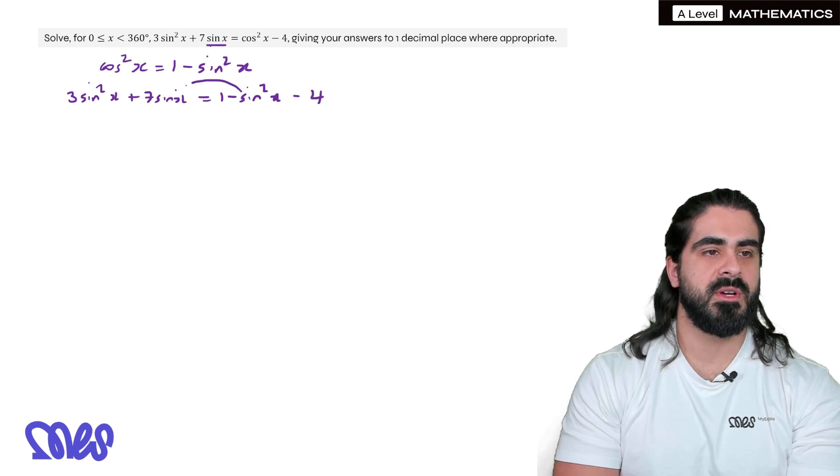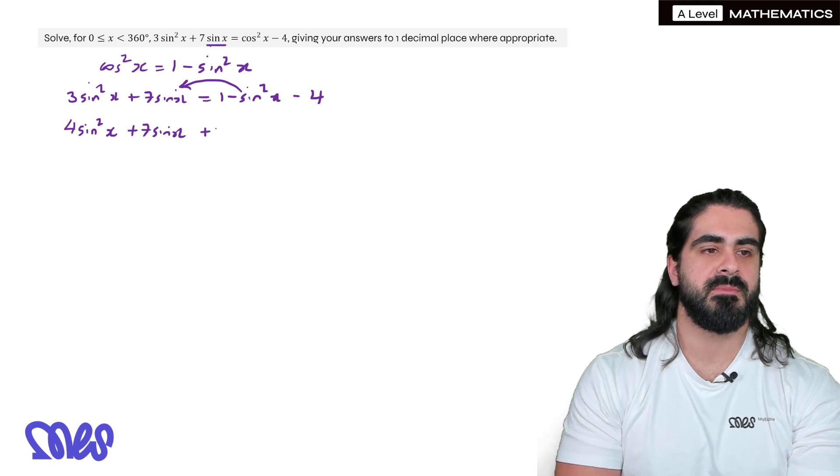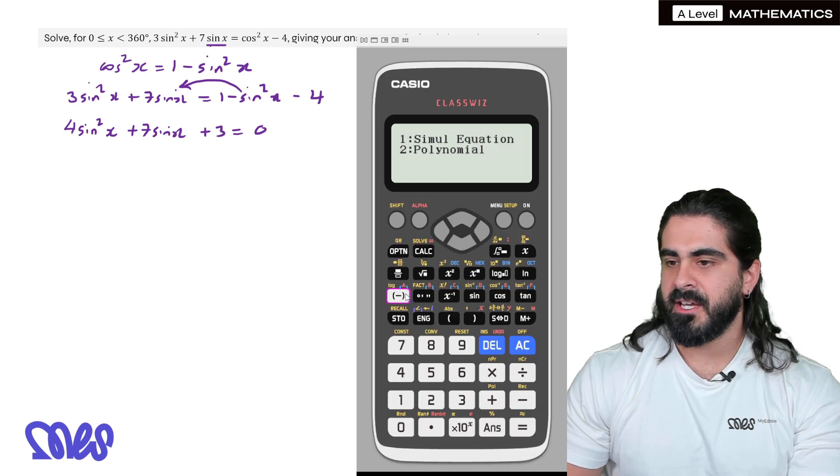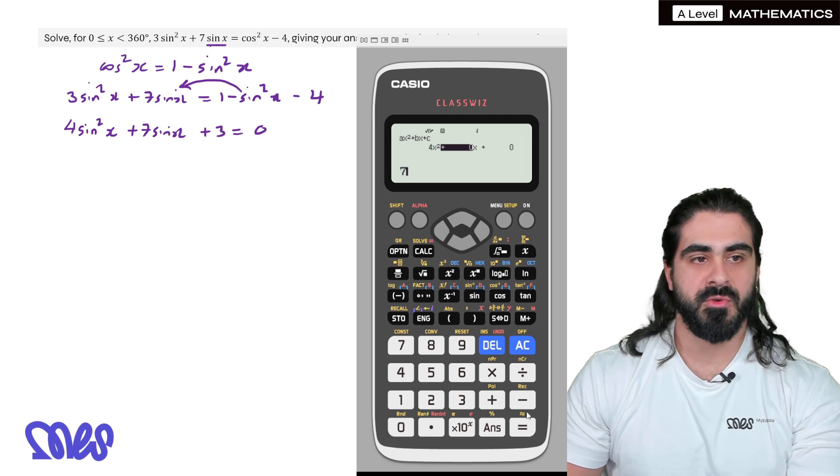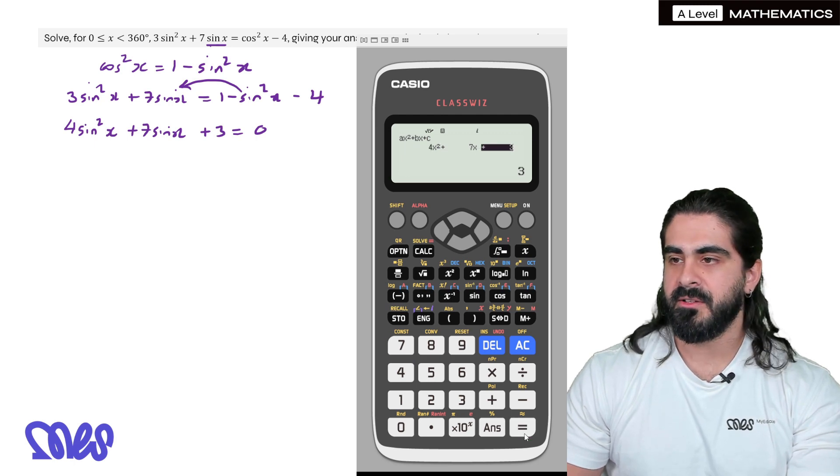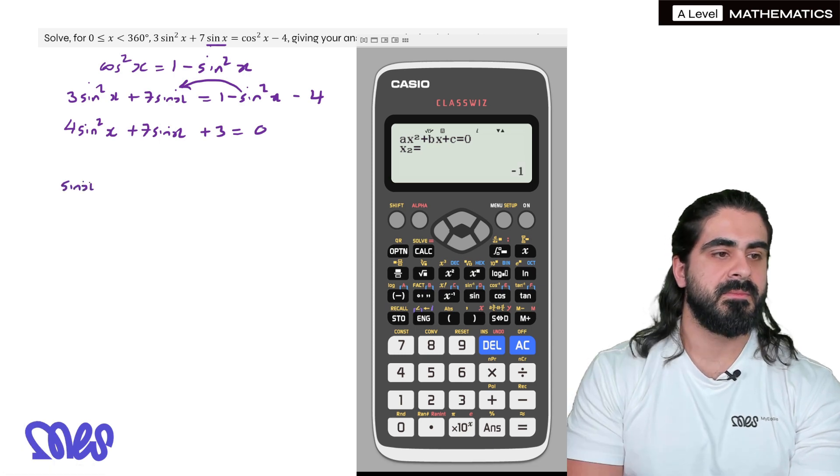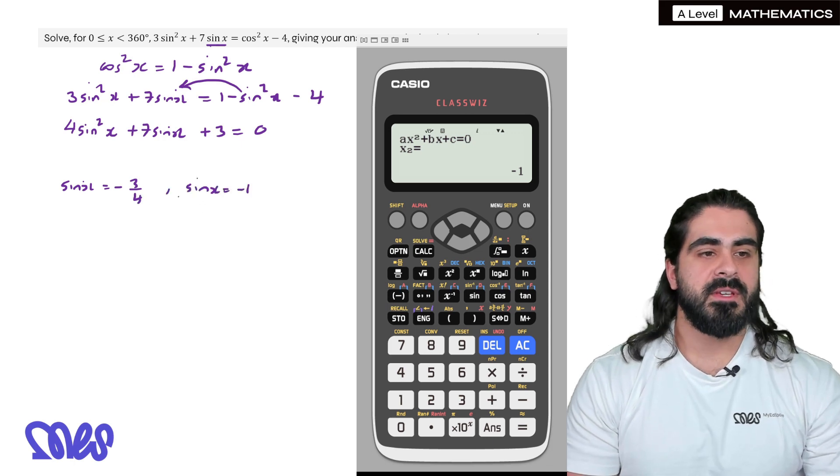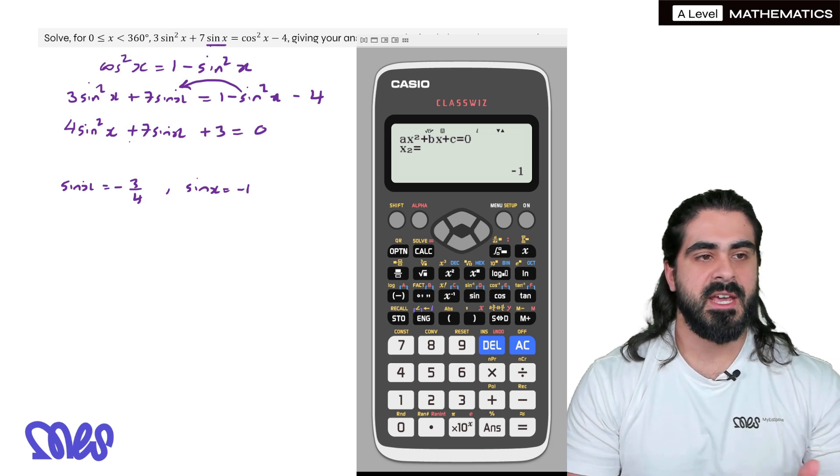That minus sine squared, let's move it to this side, we have 1 minus 4, which is minus 3. When we move it to the other side it's plus 3 equals 0. Let's check the calculator here, see if this can be factorized. If not, we're going to pretend like we use the quadratic formula. So 4, 7, and 3. Okay, minus 3 quarters and minus 1. So what would the bracket have been? It would have been sine x plus 1 times 4 sine x plus 3.